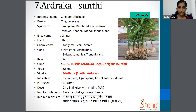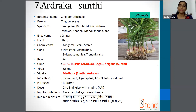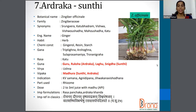The next one is Ardraka/Shunthi. The botanical name is Zingiber officinale, family Zingiberaceae. Synonyms are Shrungavera, Vishwa, Vishwaushadha, Mahaushadha, etc. The common name is Ginger. The part used is rhizome, and the dosage is 2 to 3 ml juice with Madhu as per API.